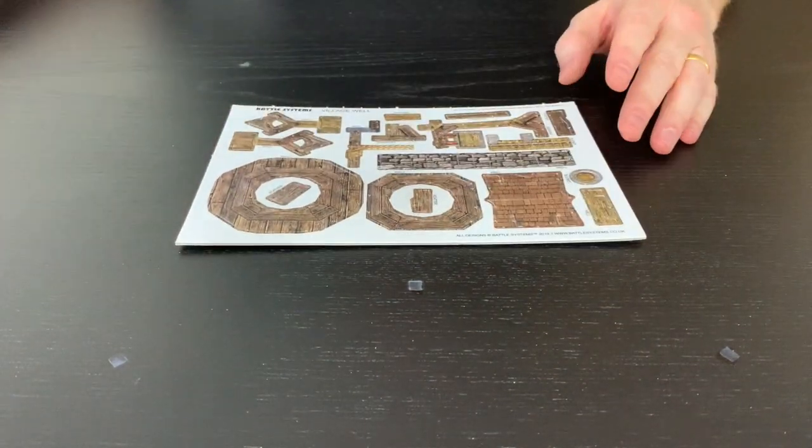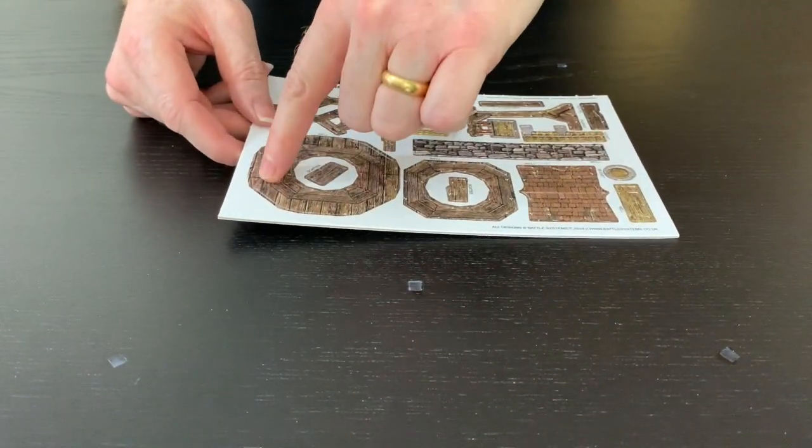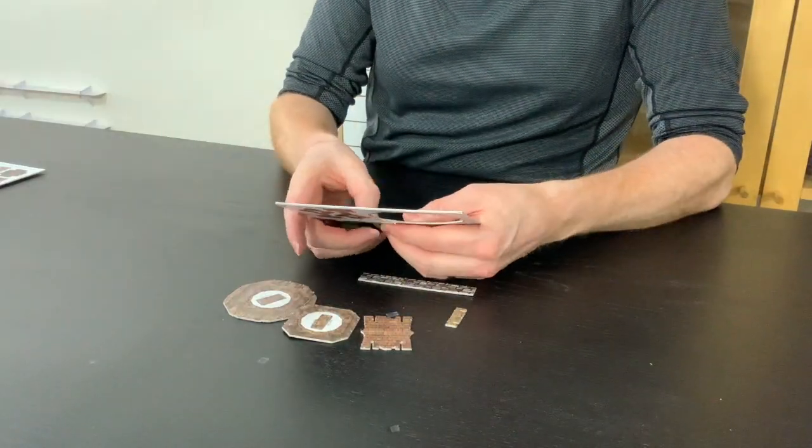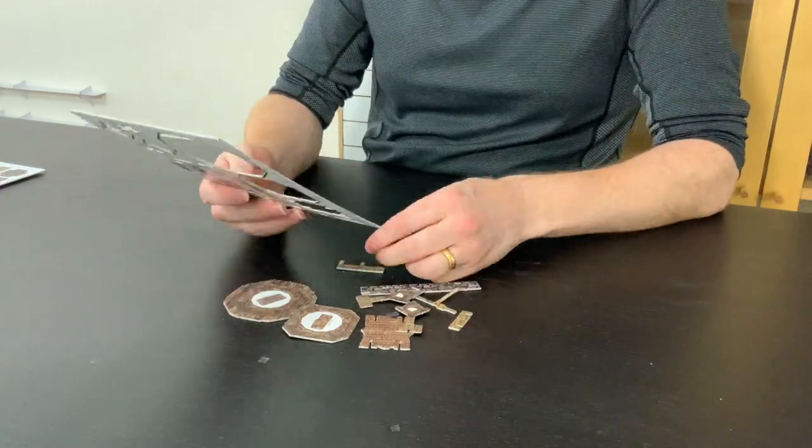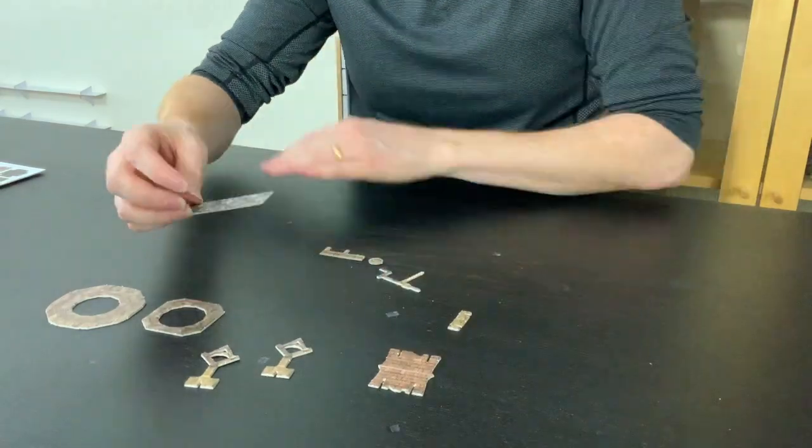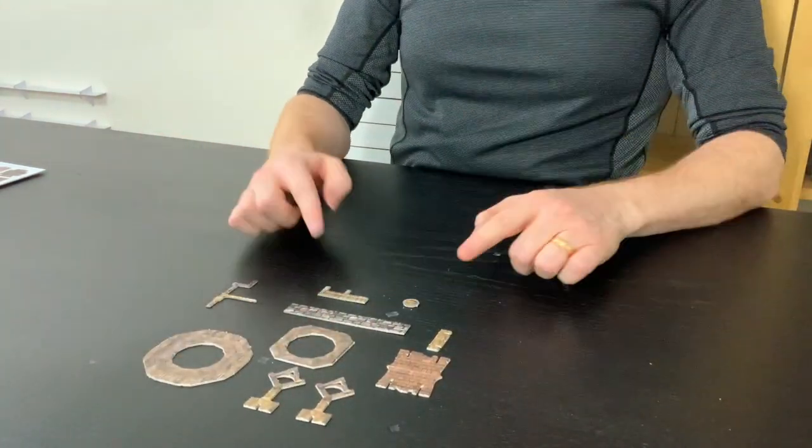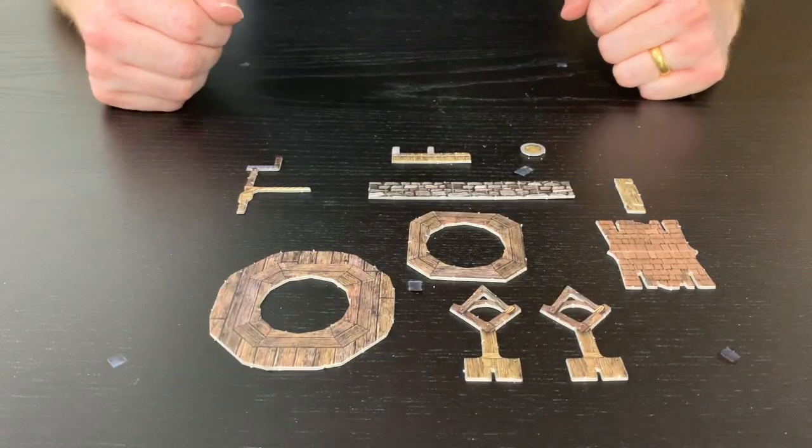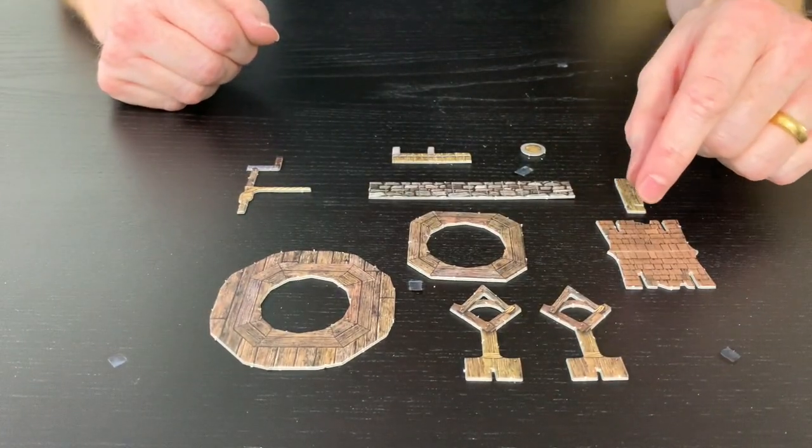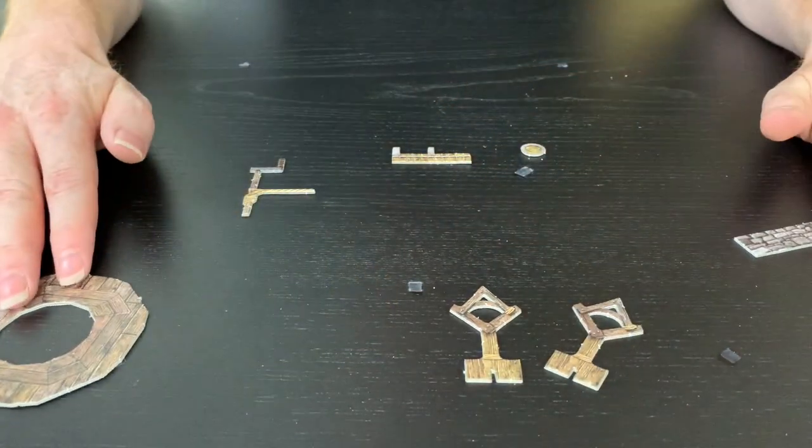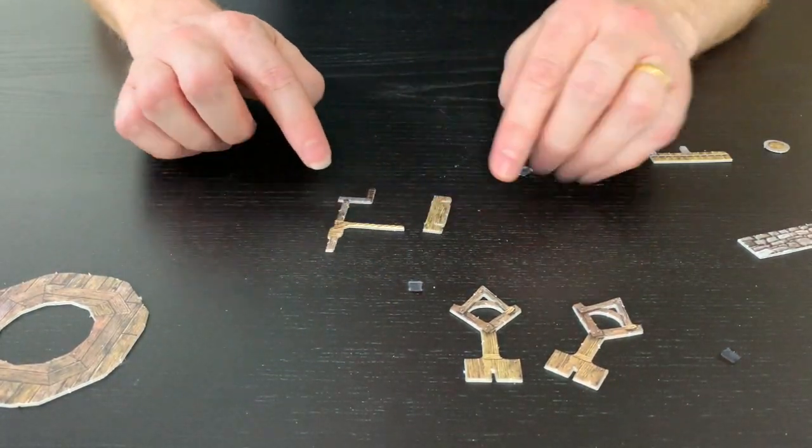Okay, so first of all let's do the well. We're going to pop all the pieces out. Here are the parts for the well. First of all, I'm going to create the bit that goes inside, so I'm going to move some of this out of the way and I'm going to use these bits here.